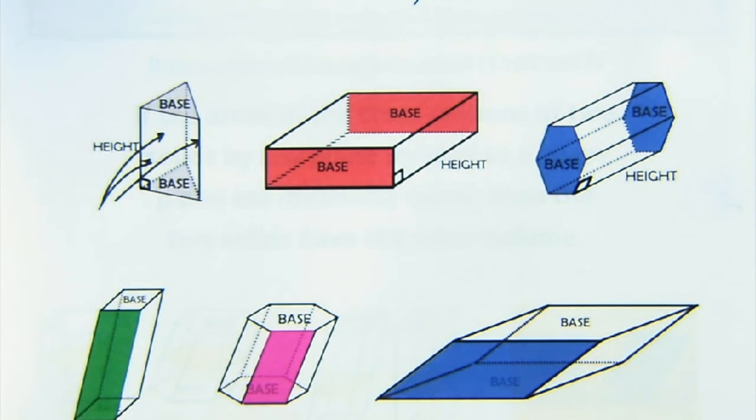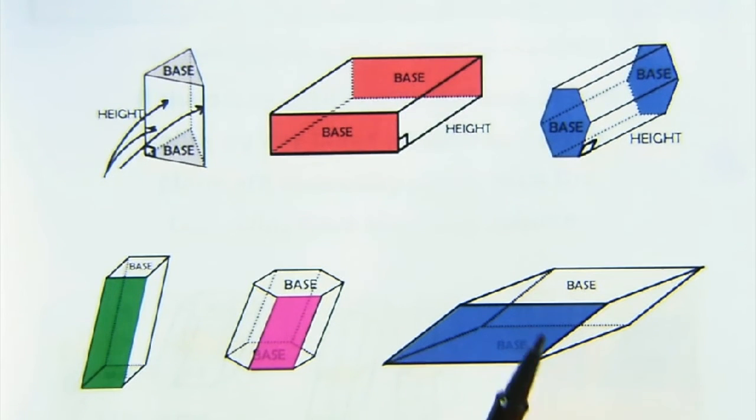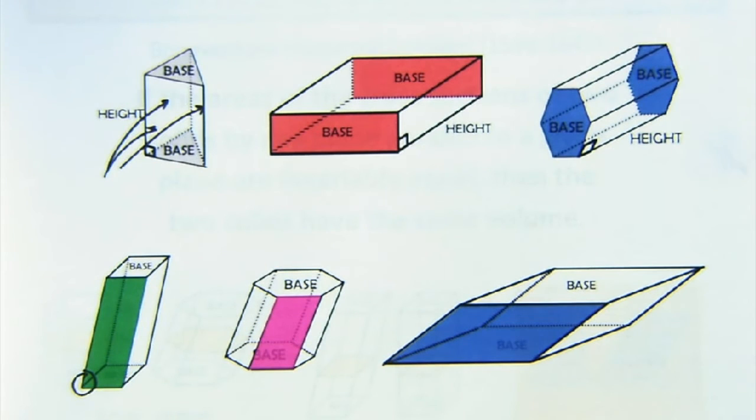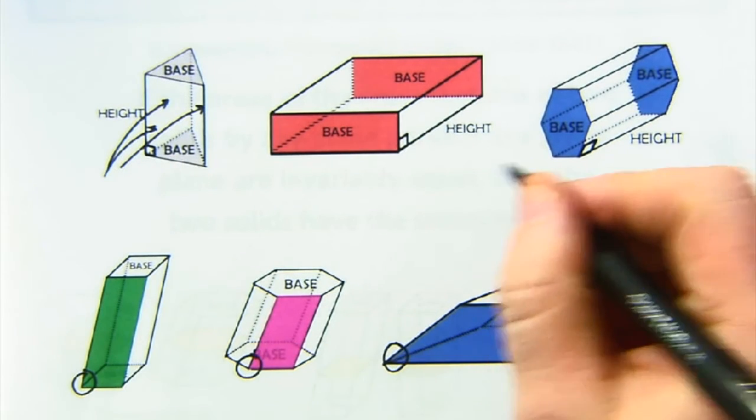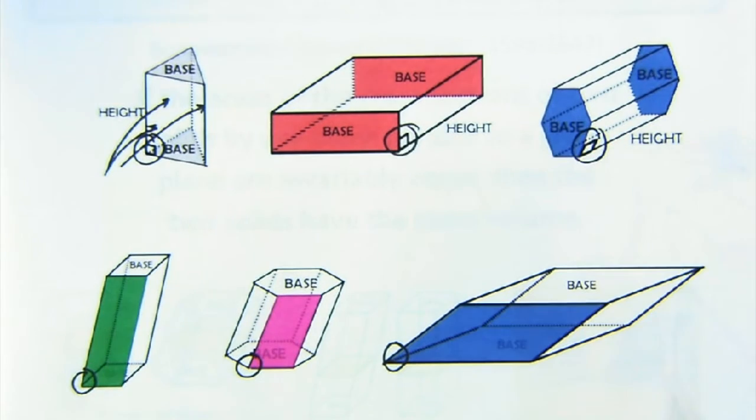Now these are also prisms but they're oblique. What oblique means is that the angle between the base and the lateral edges are not perpendicular, whereas you'll notice in these ones they were all perpendicular.